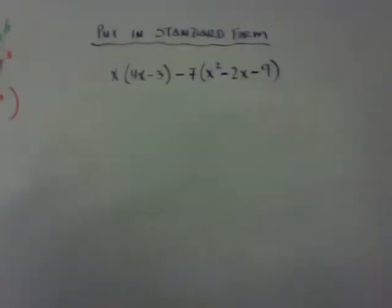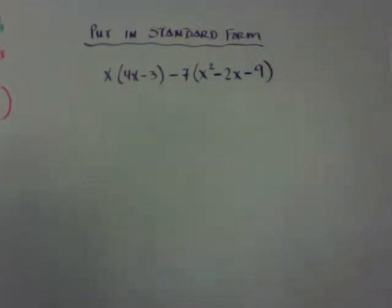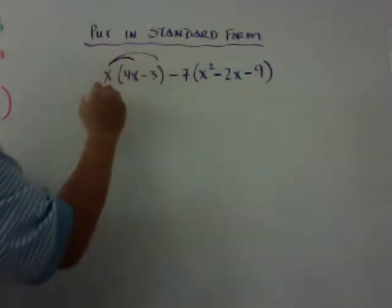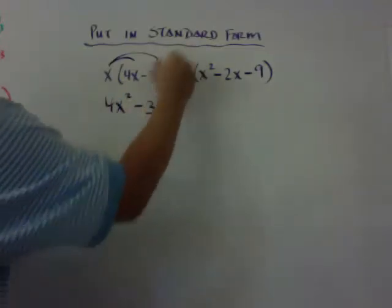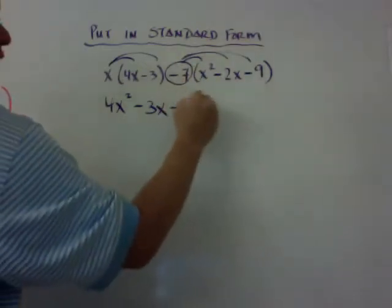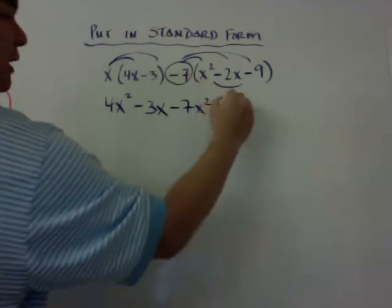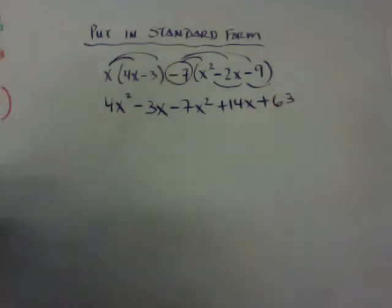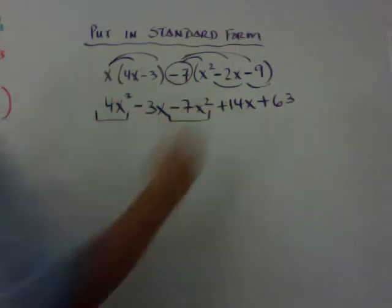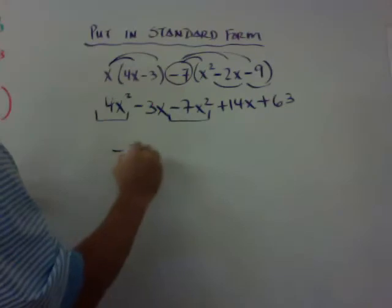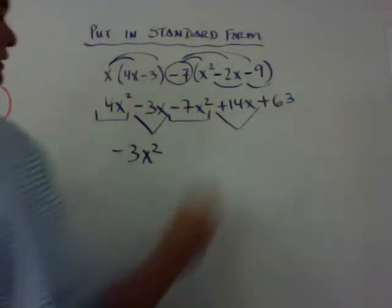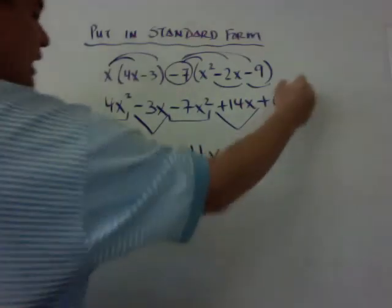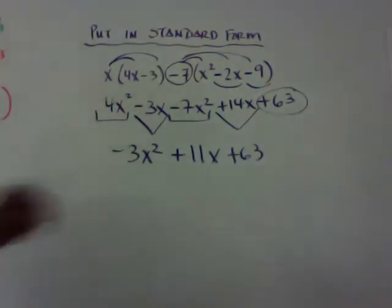The last thing I want to show you that's not in the examples very well is putting this into standard form. So I have all of this. And what I need to do is a double distributive. So I'm going to do this and I get 4x² minus 3x. Then I need to take the negative 7 and that becomes negative 7x². Negative 7 times negative 2x is plus 14x. And then negative 7 times negative 9 is plus 63. And then now I need to combine my like terms. So I have a 4x² here and a negative 7x² here. And that becomes negative 3x². I have a negative 3x and a 14x. And that becomes plus 11x. And then I just have the 63 by itself. You need to order it standard form. Highest degree down to the lowest degree. That's 9.2. Hope this helps.